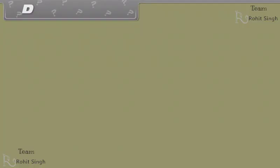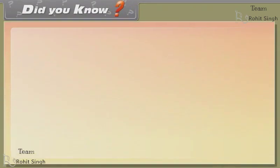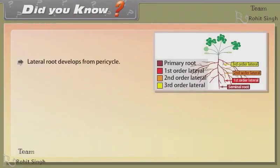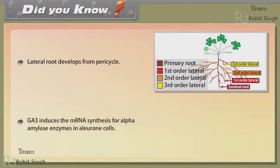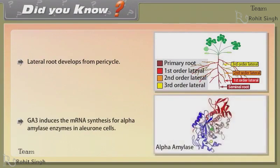Did you know: lateral root develops from the pericycle. GA3 induces the mRNA synthesis for alpha-amylase enzymes in aleurone cells.